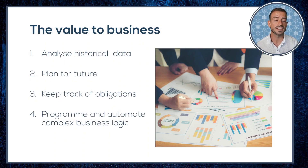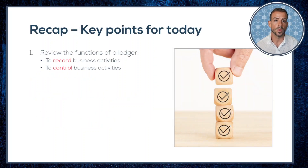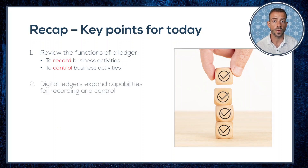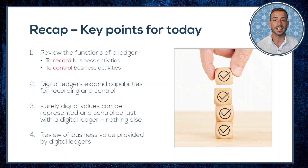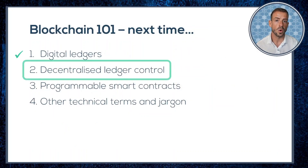And that's it for today. Let's quickly recap what we've covered. We reviewed the functions of a digital ledger — to record business activities and to control them. We looked at how digital ledgers in particular expand capabilities for recording and control. We learned how purely digital values are becoming more relevant and how they can be represented and controlled using a digital ledger and nothing else. Finally, we ended up seeing that the value creation from digital ledgers is really broad and important.